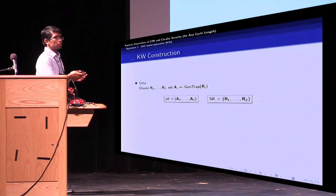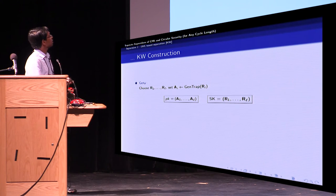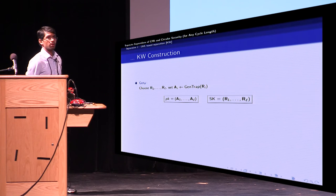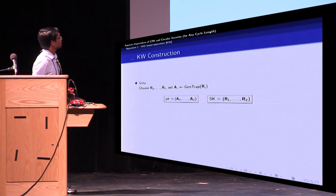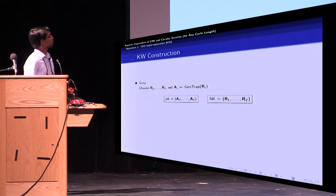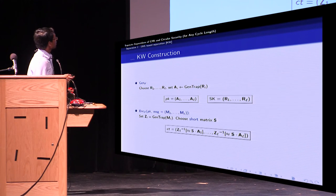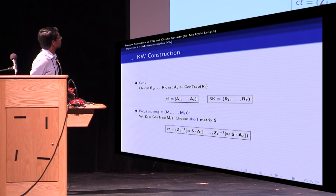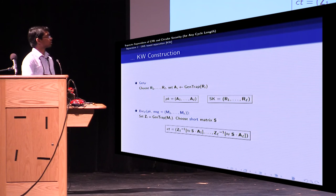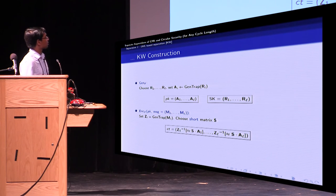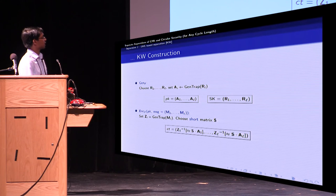The follower mode is also really simple. To generate a follower mode public key, you first choose L matrices using the GenTrap algorithm. These matrices correspond to the public key, and the randomness is the secret key. And finally, the encryption algorithm uses the message components as the randomness for GenTrap. It computes the matrix Z_i, chooses a short matrix S, and the ciphertext consists of Z_i inverse of S times A_i.